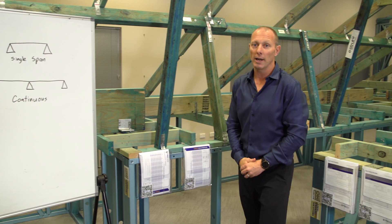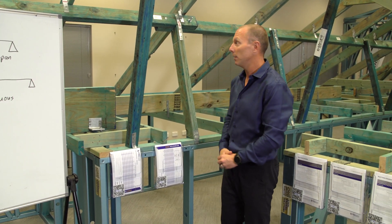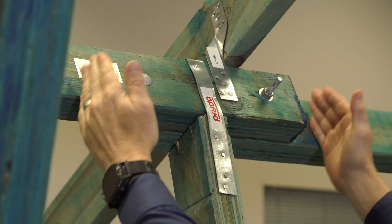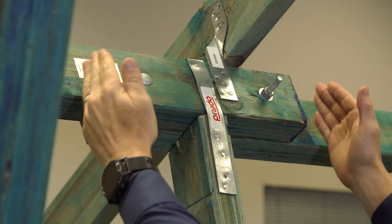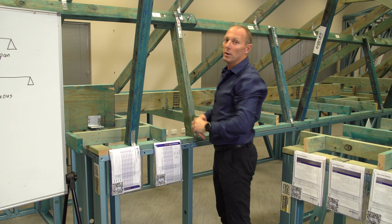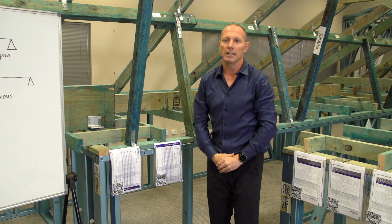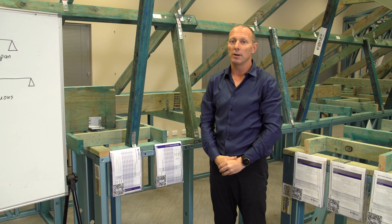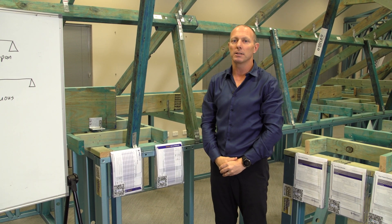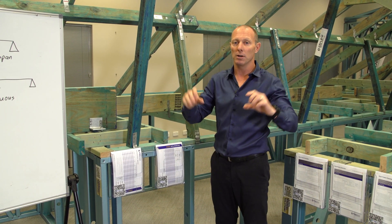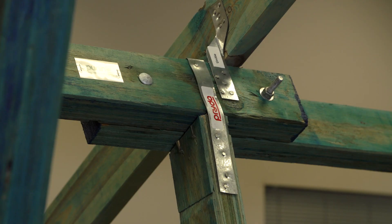Other things to look at with your underperlins is your lapping. With your laps, they need to be at least 450 millimetres and bolted over a support point.